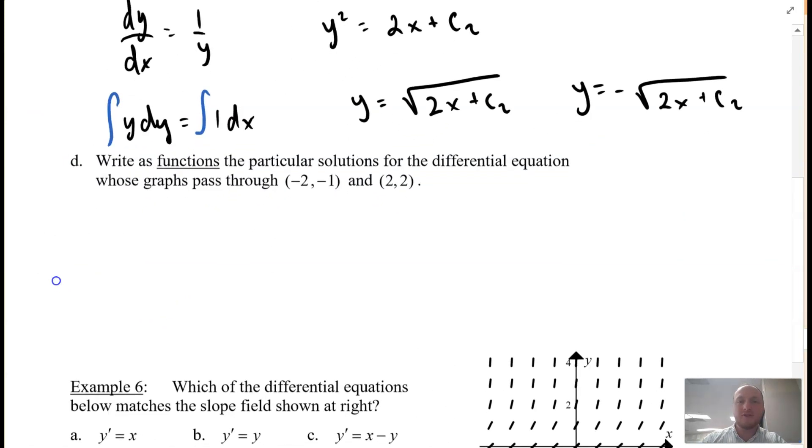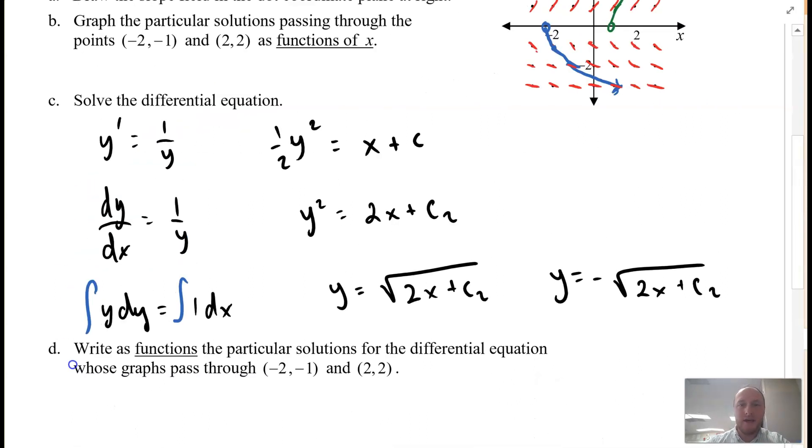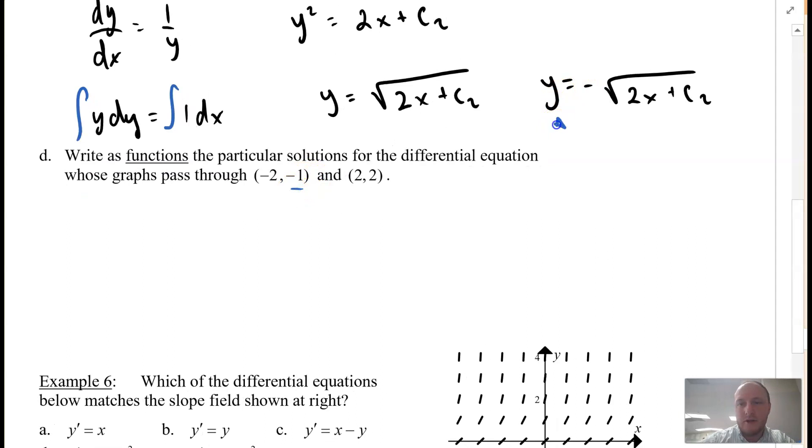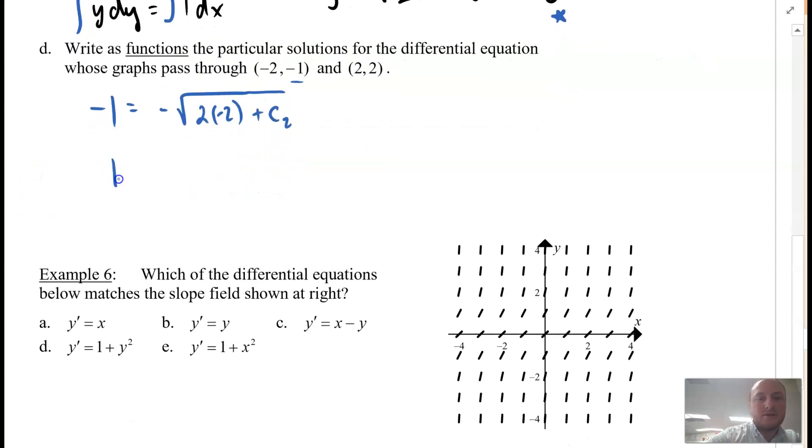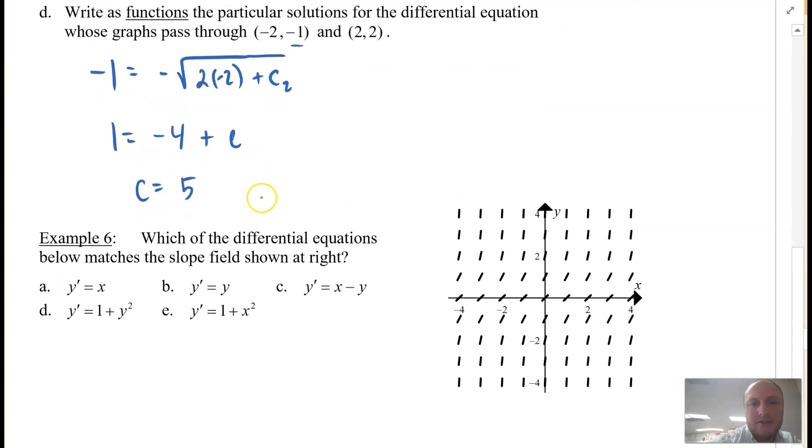So now they want us to go ahead. Part D says write the functions as particular solutions for the differential equation that pass through those two specific points that we just looked at. So again, I used blue for our first point. I'll go ahead and do that again. Now notice the y value is negative, so we're going to utilize this function. So -1 = -√(2(-2) + c). I'll square both sides, and we get -4 + c. C₂, we can call it just c, and then solving for c, we'll add 4 to both sides. So c = 5. So here is your first equation: y = -√(2x + 5). There's your first one.